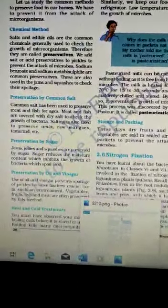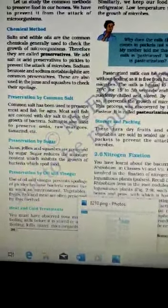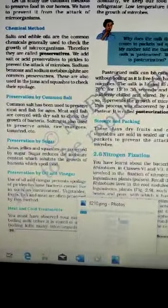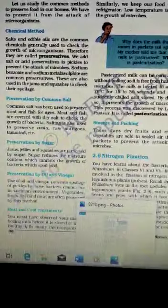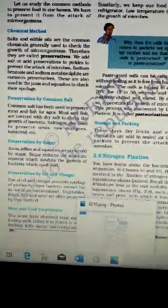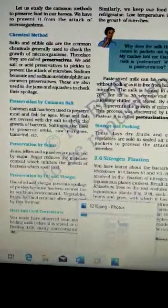The next method is preservation by common salt. Common salt has been used to preserve meat and fish for ages. Meat and fish are covered with dry salt to check the growth of bacteria. Salting is also used to preserve amla, raw mangoes, tamarind, etc.